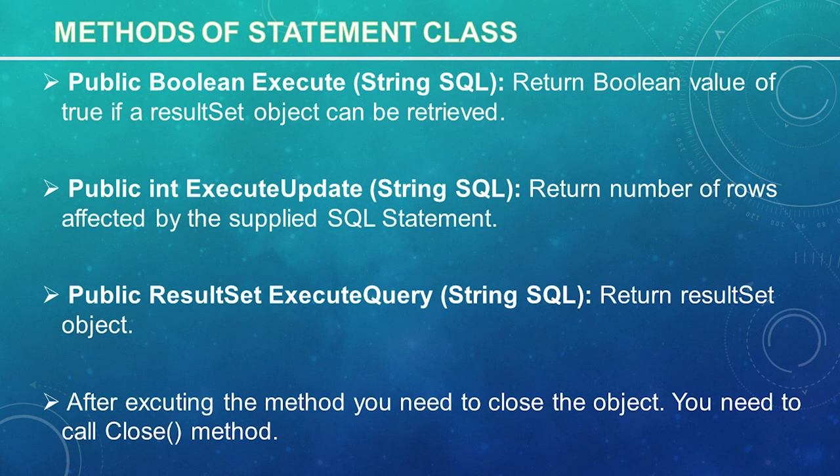So Learner, these are the three methods you can run with a statement object. After executing the methods, you need to close the statement object. Just as you close a connection object to save database resources, you should also close the statement object. A simple call to the close method will do the job. If you close the connection object first, it will close the statement object as well. However, you should always explicitly close the statement object to ensure proper cleanup.